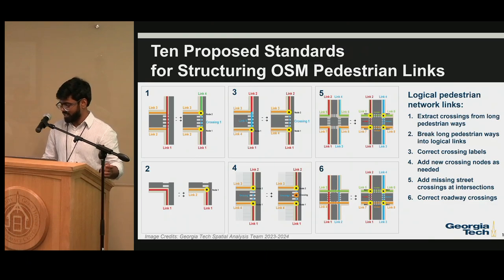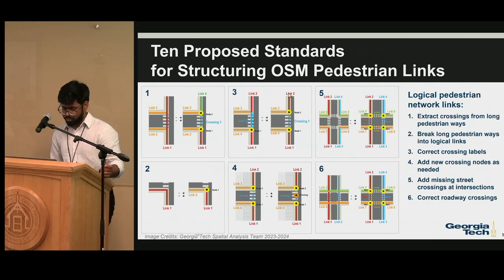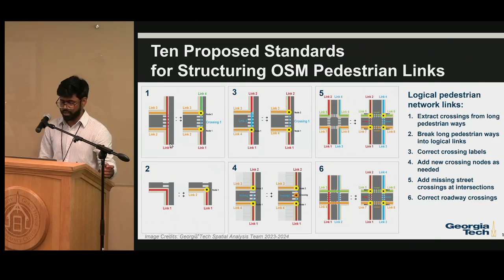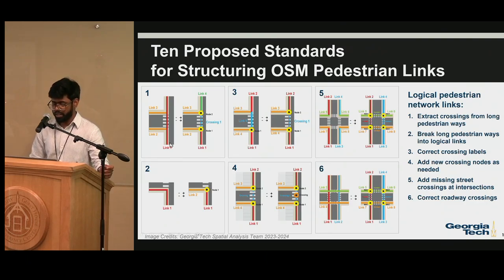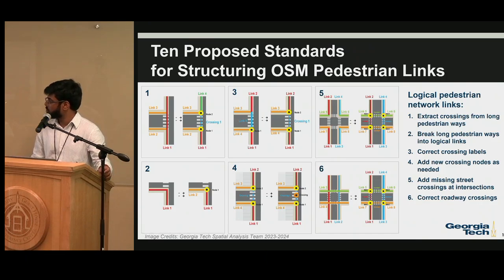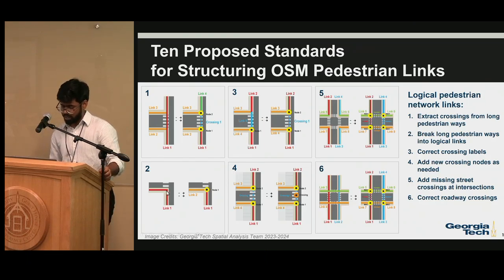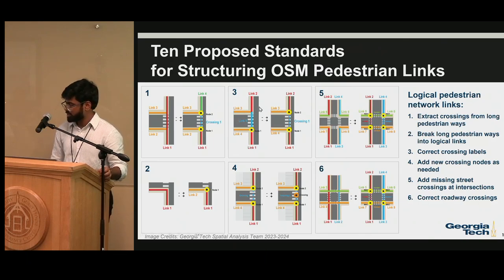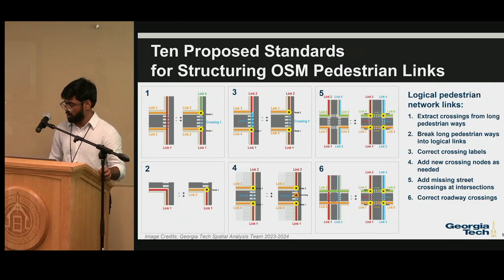We have proposed 10 standards for structuring OSM pedestrian links. The first is extracting crossing links from long pedestrian ways — we found many places where the pedestrian sidewalk link continues on the road itself, so the first step is to break that down into a crossing link. Second, links should be broken down into logical links. Third, even when a split link exists, tagging is sometimes done wrong, so it is very important to ensure every crossing link is tagged appropriately.